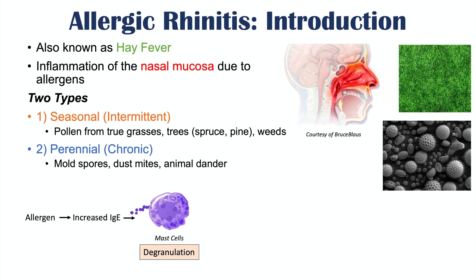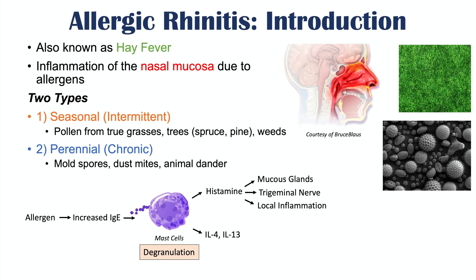Degranulation means that mast cells release preformed cytokines, including histamine. Histamine and other inflammatory mediators lead to increased production and release of mucus from the mucus glands. Histamine specifically acts on the trigeminal nerve to induce sneezing, and also causes local inflammation. Mast cells also release interleukin-4 and interleukin-13, which induce cell infiltration — like eosinophils — into the nasal mucosa, leading to nasal edema and congestion.